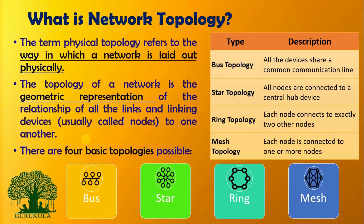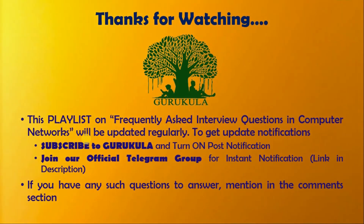These are the four basic topologies generally used in network scenarios. It does not mean we should use only these particular topologies — we may use a combination of all of them, and that is what we call a hybrid topology. I hope you now have a clear understanding of what topologies are.